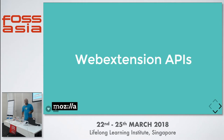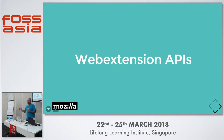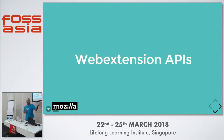The important thing is the WebExtensions API. Everyone knows what an API is. When we say JavaScript is doing the thing, actually JavaScript is just triggering the API provided by the browser, and that API is doing the actual thing. For example, if we're generating a notification via our extension, what's happening is we're using the browser notification API, and that API is actually generating the notification in the background.